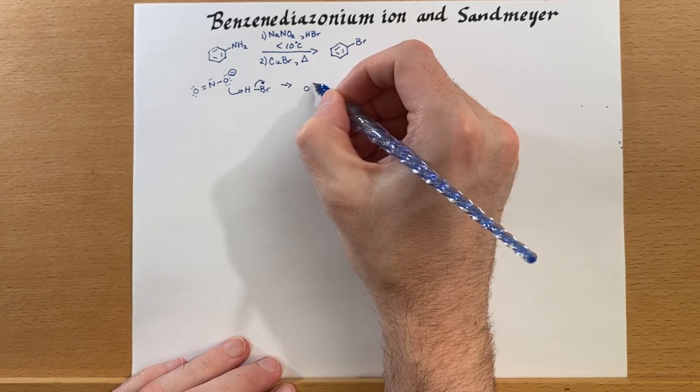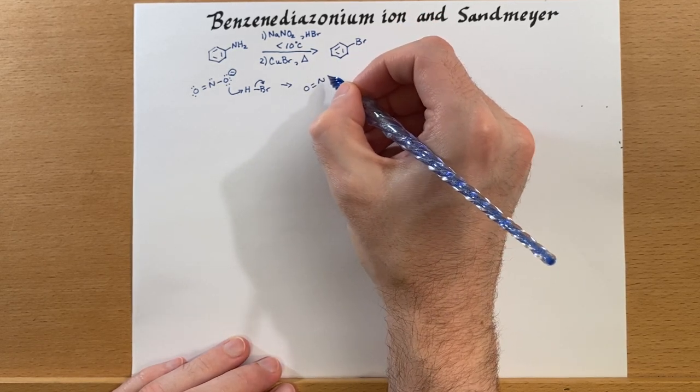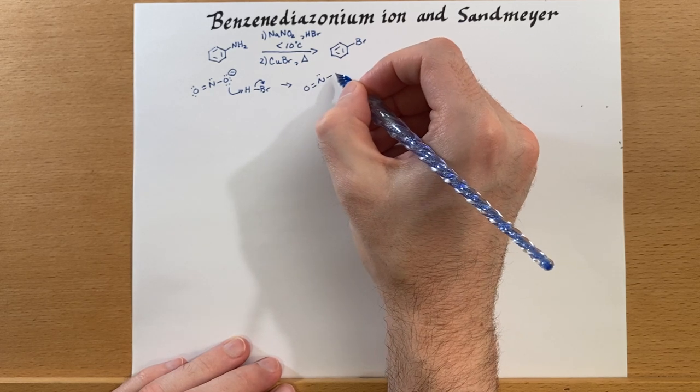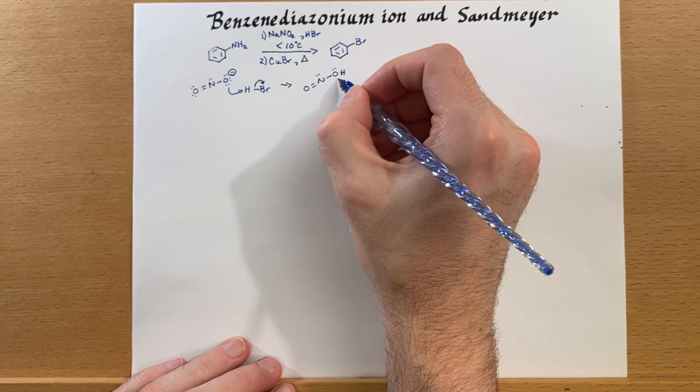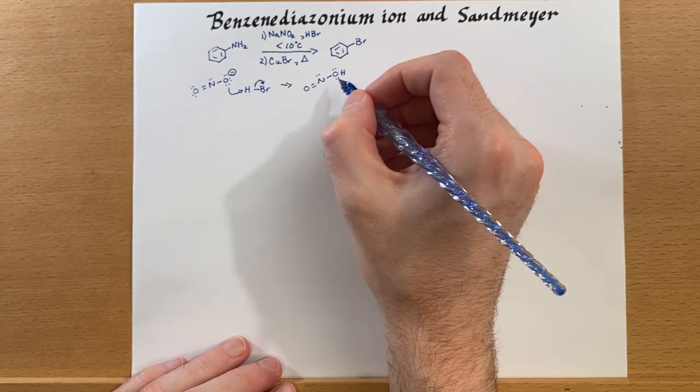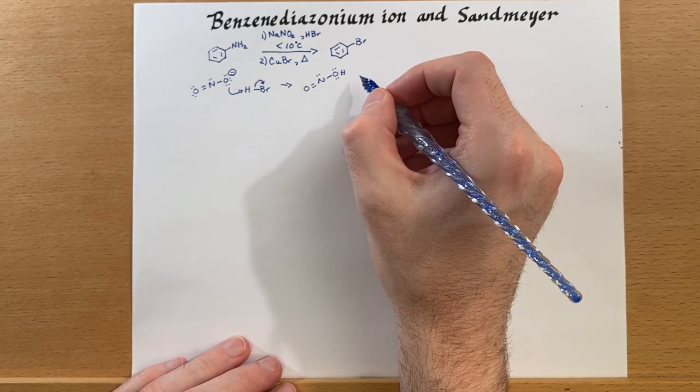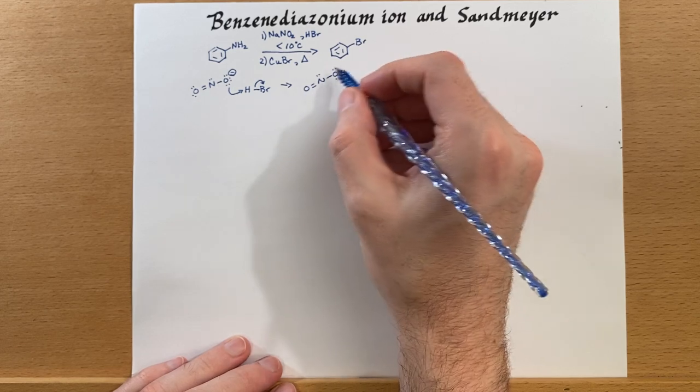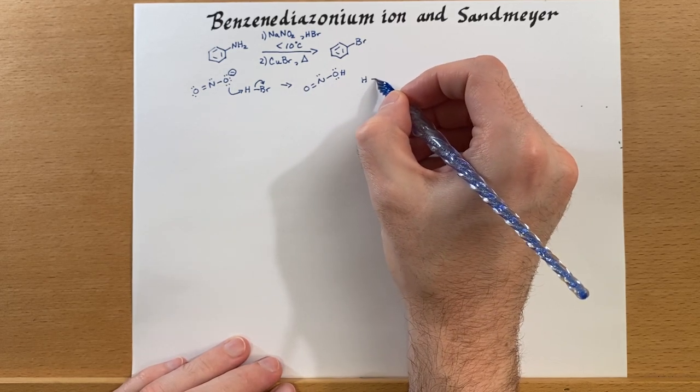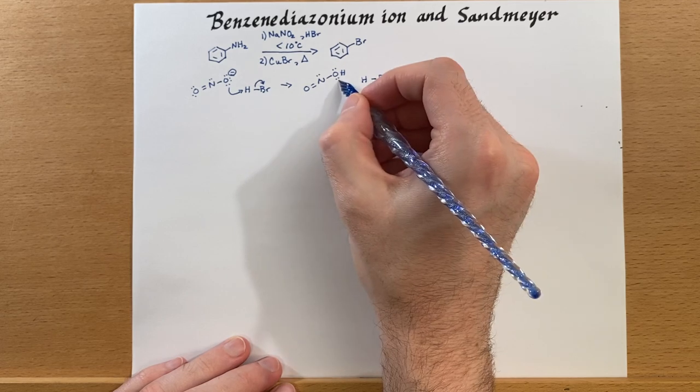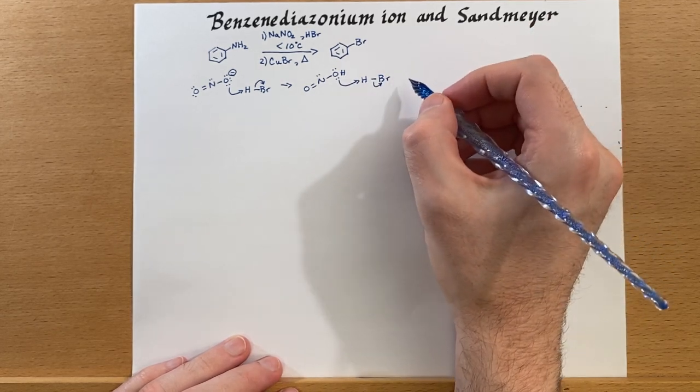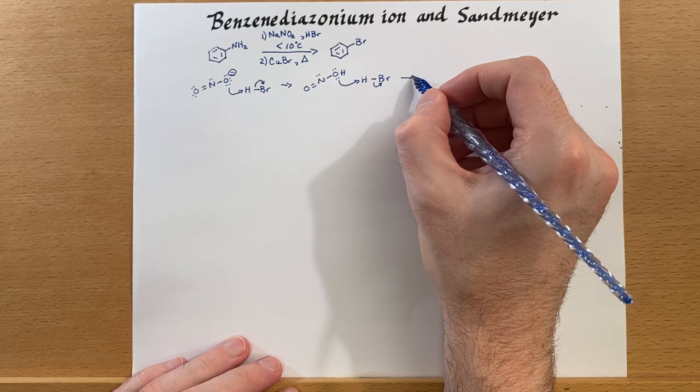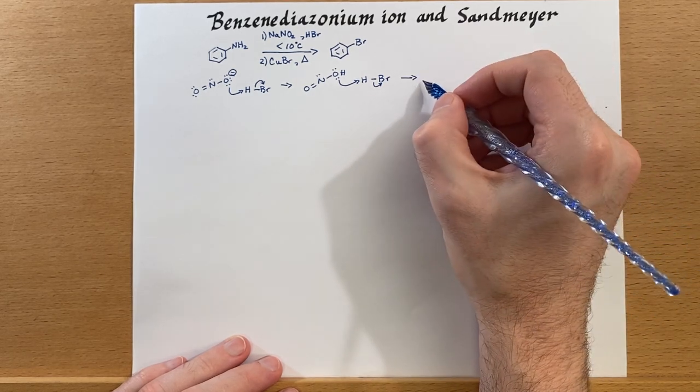Now we'll have nitrous acid, which is a weak acid. Like so. Now we're going to protonate this. And the goal here is really to generate a good leaving group.